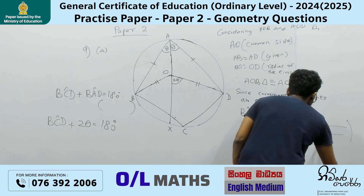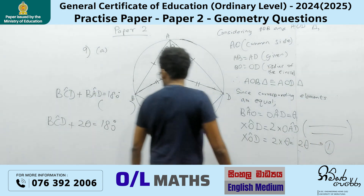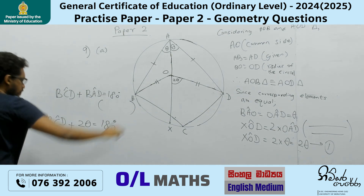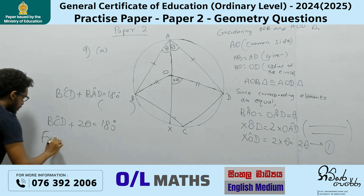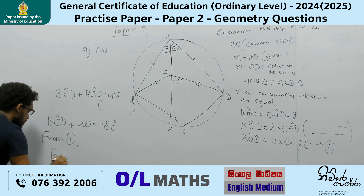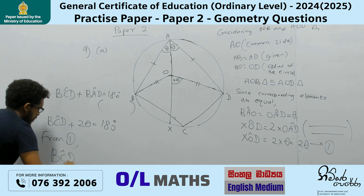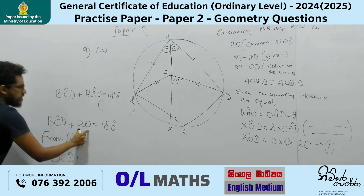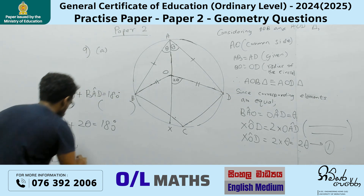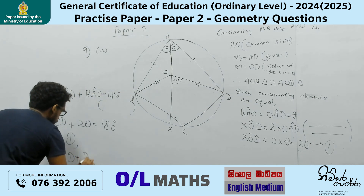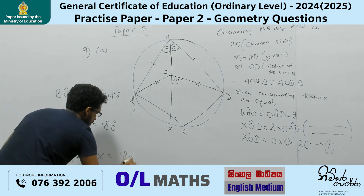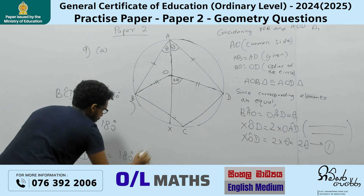If I take this as equation 1, then from equation 1, BCD plus 2 theta equals 180. And since DOX equals 2 theta, we can write BCD plus DOX equals 180. There's the solution.